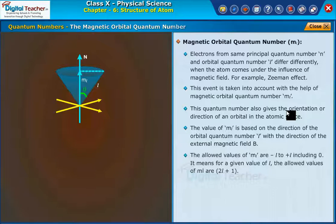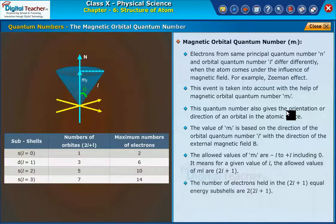The allowed values of m_l are minus l to plus l, including 0. It means for a given value of l, the allowed values of m_l are 2l plus 1. The number of electrons held in the 2l plus 1 equal energy sub-shells are 2 into 2l plus 1.